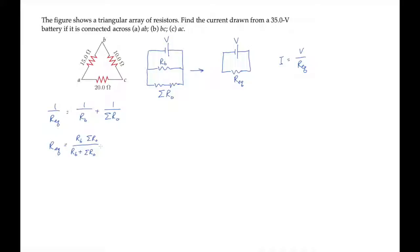Notice that the denominator is just the sum of all the resistances in the circuit, so we can rewrite it this way and substitute into our expression for the current.